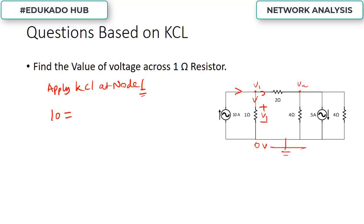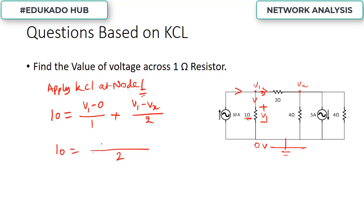Current through the 1 ohm resistance equals V1 minus 0 upon 1, and current through the 2 ohm resistance equals V1 minus Vx upon 2. Applying KCL at node 1 — incoming equals outgoing — we get: V1 upon 1 plus (V1 minus Vx) upon 2 equals 10. Solving this gives 2V1 plus V1 minus Vx equals 20, or 3V1 minus Vx equals 20. This is Equation 1.